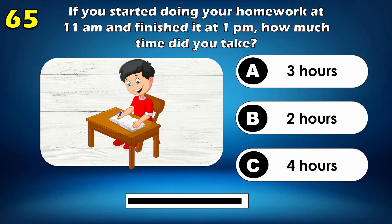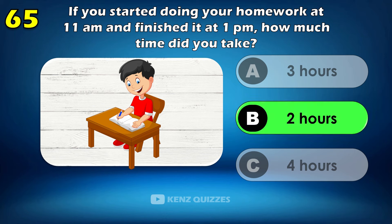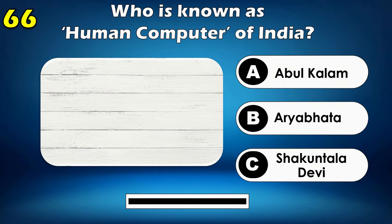If you started doing your homework at 11 AM and finished it at 1 PM, how much time did you take? 2 hours. Who is known as the Human Computer of India? Shakuntala Devi.